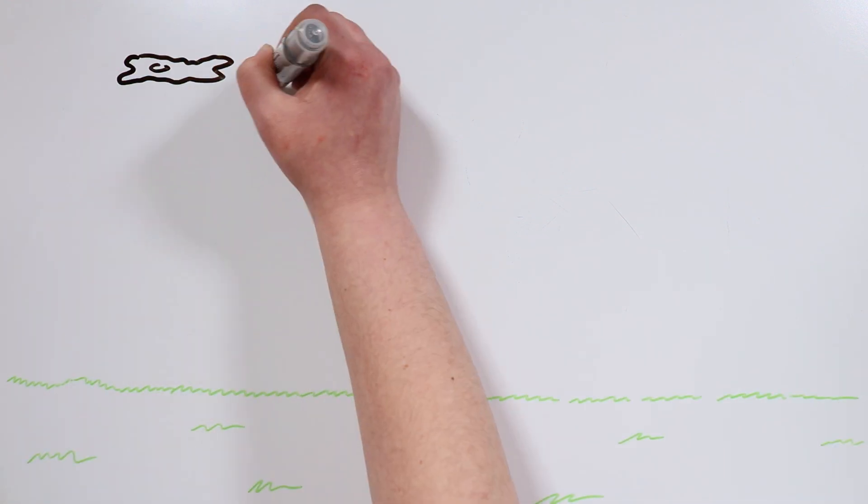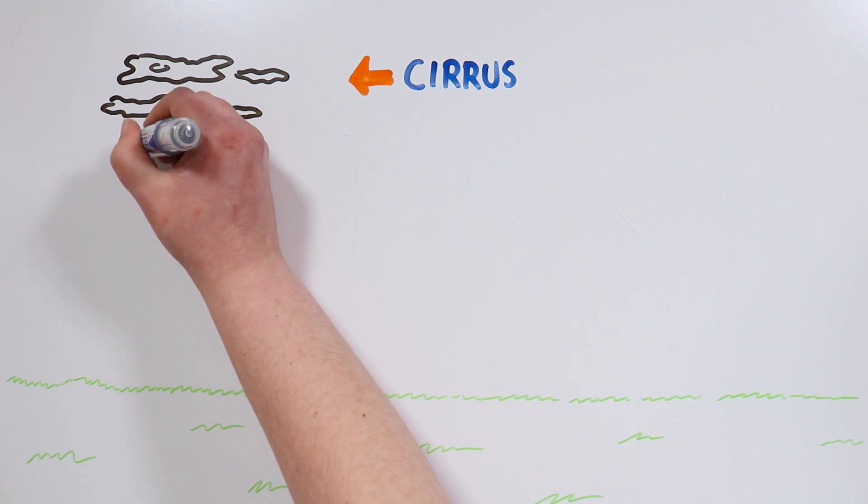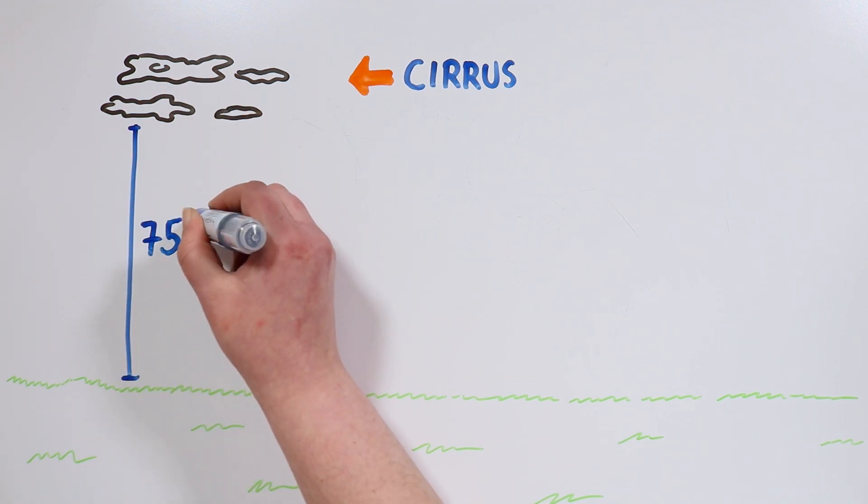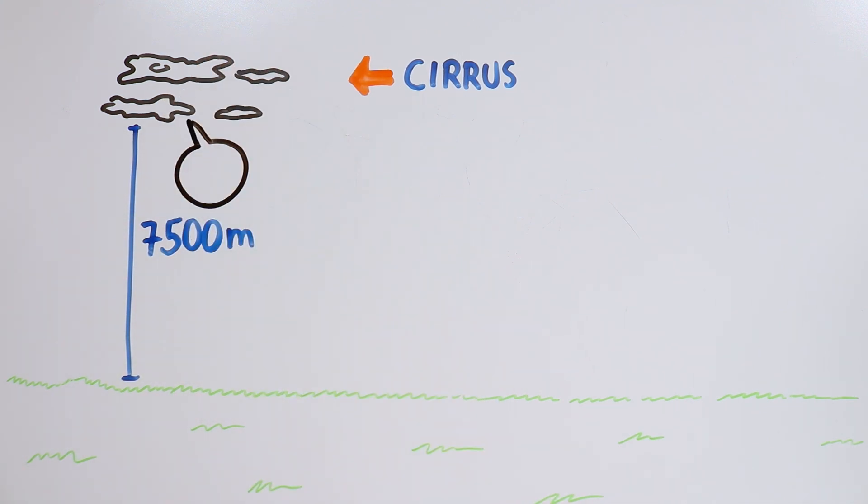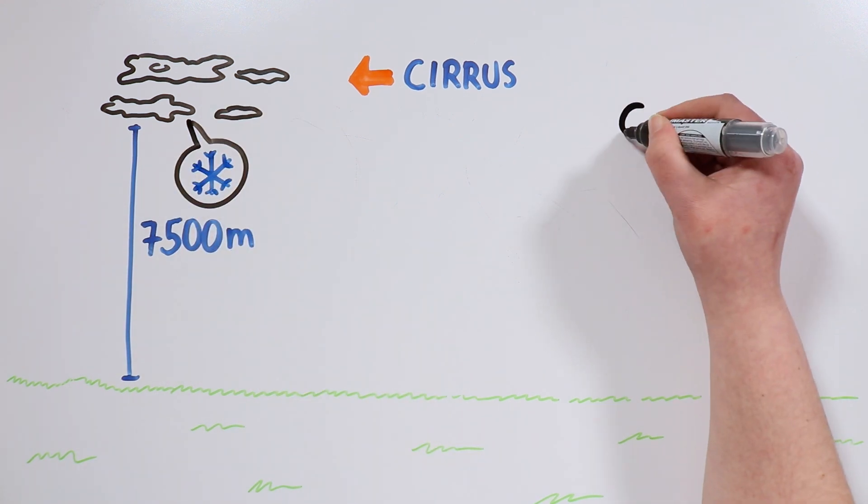The clouds at the higher level are called cirrus. They tend to be white, light, and fine, and they normally appear spread over the sky. They are located at heights higher than 7500 meters, and are formed by tiny ice crystals.